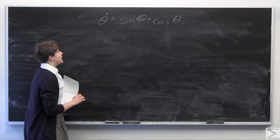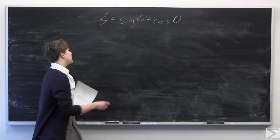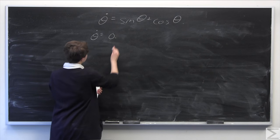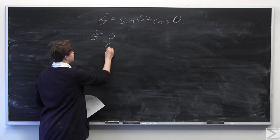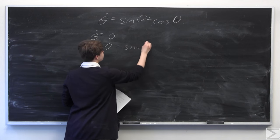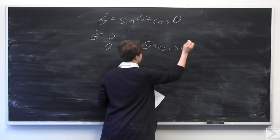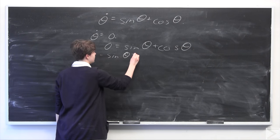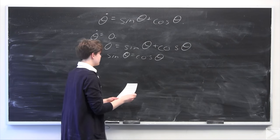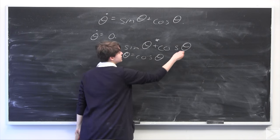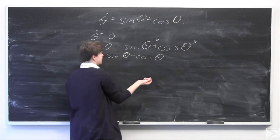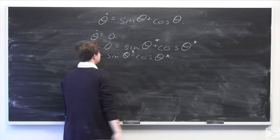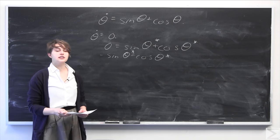We're going to start by finding the fixed points. The fixed points occur where theta dot is equal to 0. So we set theta dot equal to 0: 0 equals sine theta plus cosine theta. We subtract sine theta from both sides to get negative sine theta star equal to cosine theta star, where theta star denotes our fixed points.